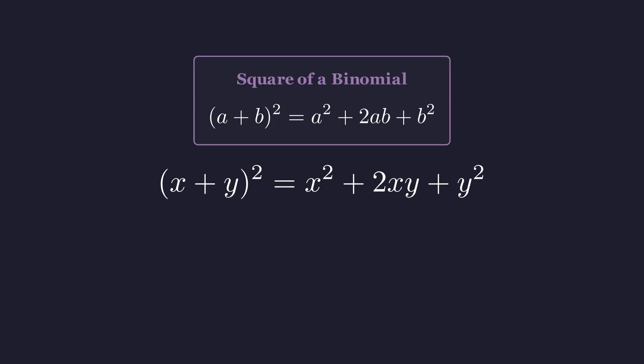So x plus y quantity squared equals x squared plus 2xy plus y squared. Since x plus y equals 1, we have 1 squared equals x squared plus 2xy plus y squared, which simplifies to 1 equals x squared plus y squared plus 2xy. Now we can solve for that x squared plus y squared term. Subtracting 2xy from both sides, we get x squared plus y squared equals 1 minus 2xy. Perfect. This is our bridge between the two expressions.